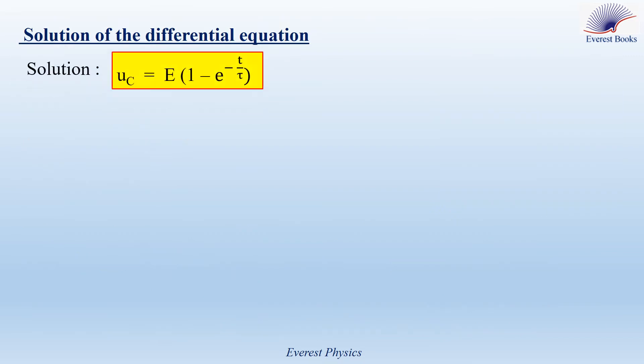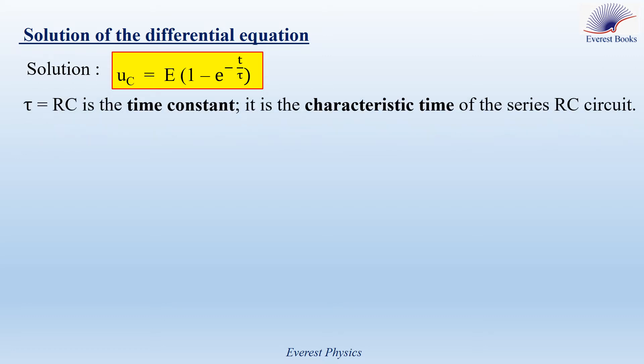The solution of the obtained differential equation has the form UC equals E times (1 minus exponential of minus T over tau), where tau equals R times C is the time constant — the characteristic time of the series RC circuit. The physical meaning of tau will be studied later in this video. To verify that UC is a solution, we have two steps: first, differentiate UC with respect to time; second, replace the expressions of UC and DUC/DT in the differential equation and arrange to prove that the left side equals the right side.